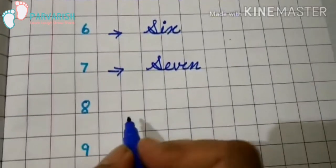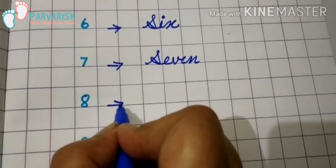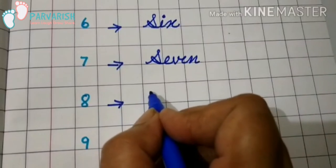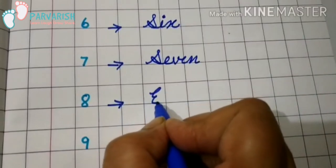And remember, in cursive you have to write. Last, I have written capital letters. I have written 1 to 5. But,